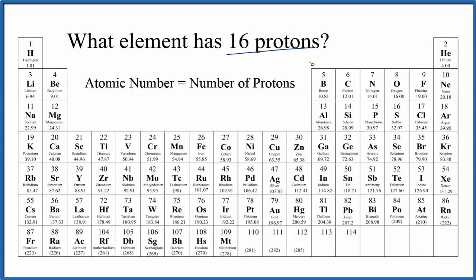All we need to do is find 16 on the periodic table. The atomic number 16, those are the elements above the symbols, and here it is: 16, that is sulfur. The element that has 16 protons is sulfur.